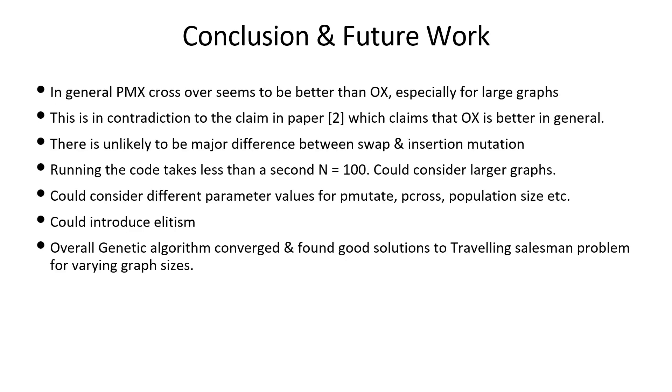In general, PMX crossover seems to be better than OX, especially for large graphs. This is in contradiction to the claim in the paper which claims that OX is better in general. There is unlikely to be a major difference between swap and insertion mutation. Running the code takes less than a second for n equals 100. Could consider larger graphs, different parameter values of P mutate, P cross, population size, etc. Could introduce elitism. Overall, genetic algorithm converged and found good solutions to traveling salesman problem for varying graph sizes.